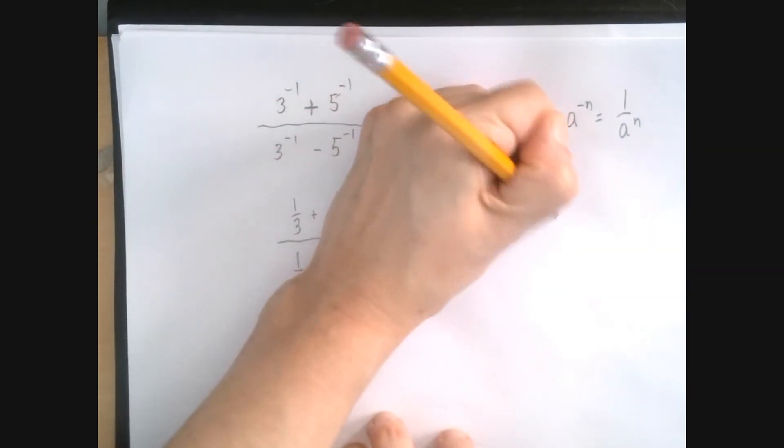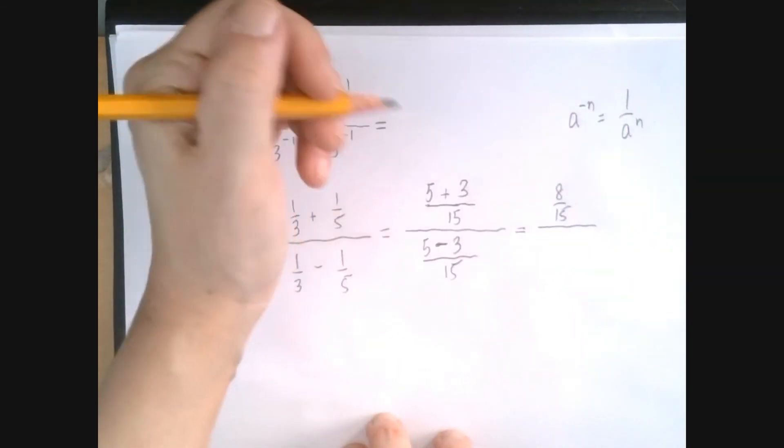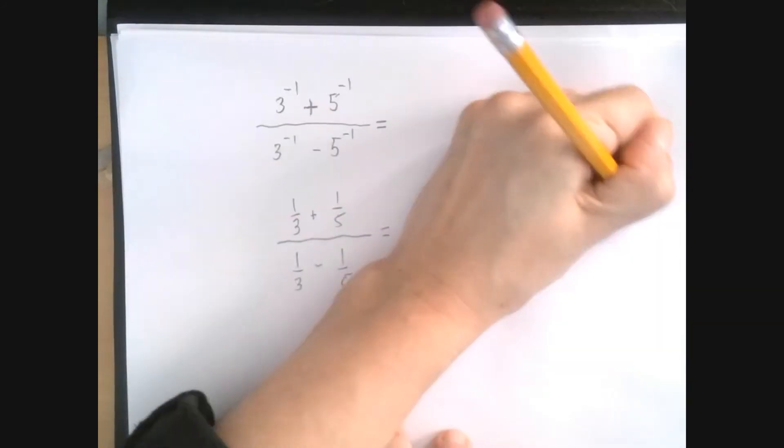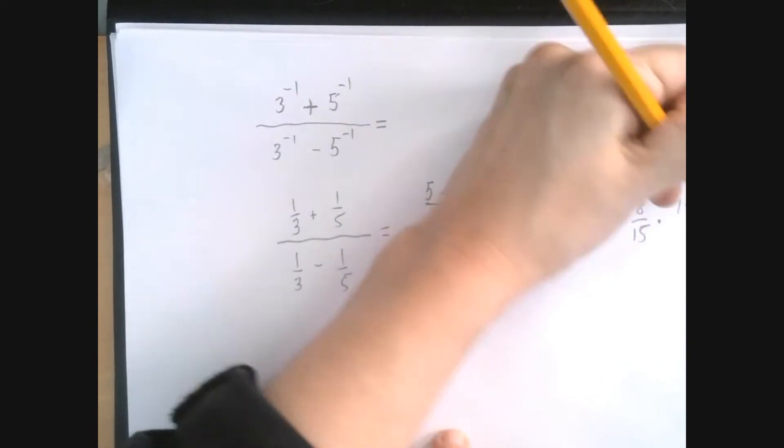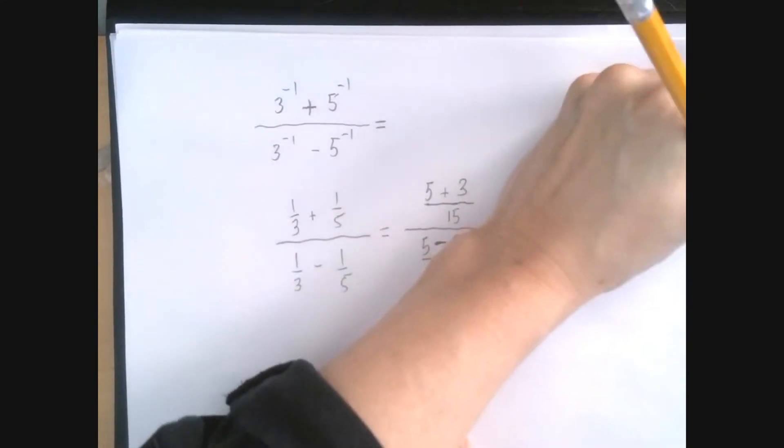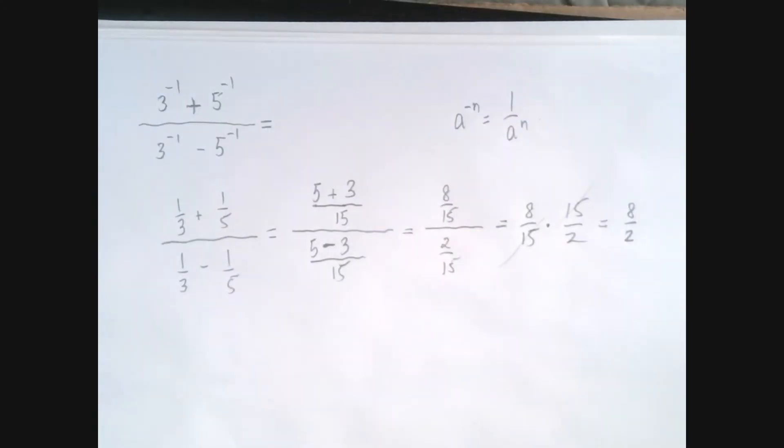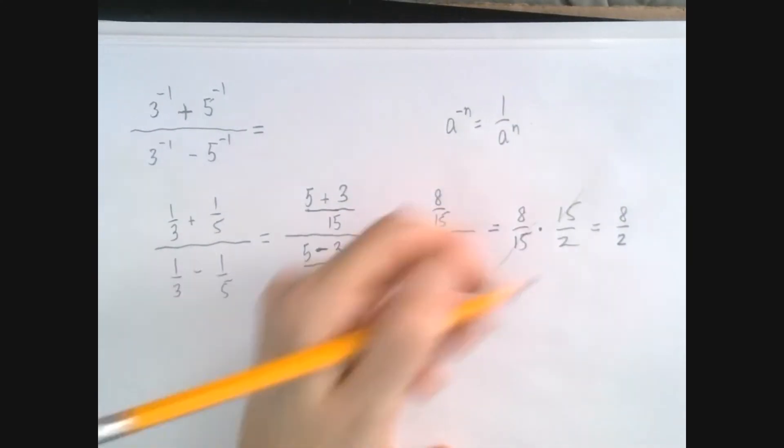So we have 8 over 15 divided by 2 over 15. To divide is to multiply by the reciprocal. So we're talking about 8 over 15 times 15 over 2. We can cancel out 15, so we have 8 over 2, which is 4.